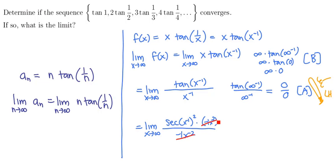Now so you get a cancellation. These two terms cancel. And so we're left with the limit as x tends to infinity of secant of x to the minus 1 quantity squared. Now if we let x tend to infinity again, we're going to have secant of infinity to the minus 1 quantity squared. That's the same thing as secant of 0 quantity squared. And that's just 1.